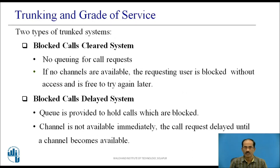There are two types of trunked systems. The first is the blocked calls cleared system, which offers no queuing for call requests. Each user is given immediate access to a channel if one is available, with no setup time assumed. If no channels are available, the requesting user is blocked without access and is free to try again later. The second is the blocked calls delayed system, where a queue is provided to hold blocked calls. If a channel is not immediately available, the call request is delayed until a channel becomes available.